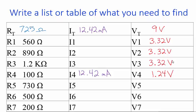And now looking at my chart, I can see that I have R1 and V1, so I can solve using Ohm's law for I1, for the current passing through resistor 1, and the same for current 2 and current 3. So I'll use 3.32 volts divided by 560 ohms to get current 1, which is 5.93 milliamps. Current 2, I use 3.32 volts divided by 890 ohms to get 3.73 milliamp, and current 3 is 3.32 volts divided by 1,200 ohms to give me 2.77 milliamps.